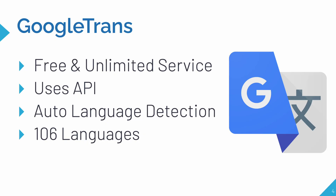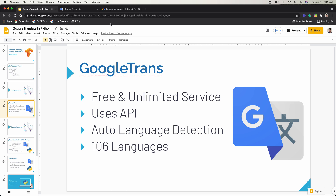So first of all, what is the Google Trans library? The Google Trans library is a library created by Google itself and the Google Translate team, and it's an open source library that's free and it has unlimited service for Python. It uses a Google Translate API that we'll check out in the demo, and it also supports auto language detection, just like real Google Translate. So let's check out that auto language detection.